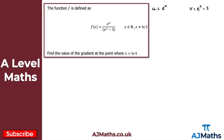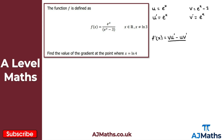We also need u prime and v prime. Differentiating e to the x with respect to x gives u prime equals e to the x. Differentiating e to the x minus 3 with respect to x gives v prime equals e to the x as well. Recalling the quotient rule: f prime of x equals v times u prime minus u times v prime, all divided by v squared.